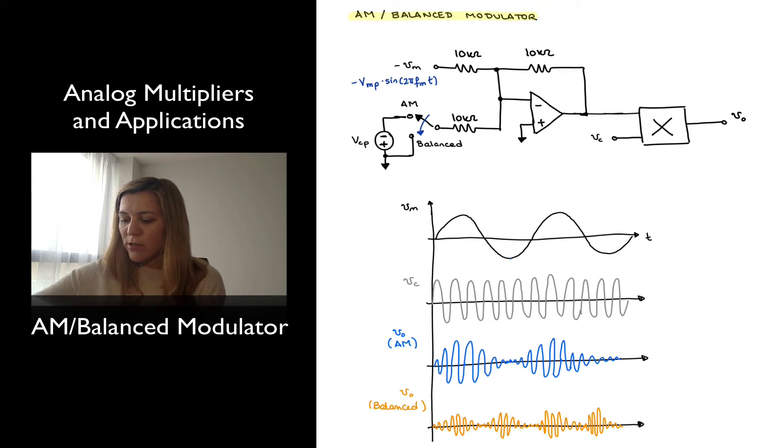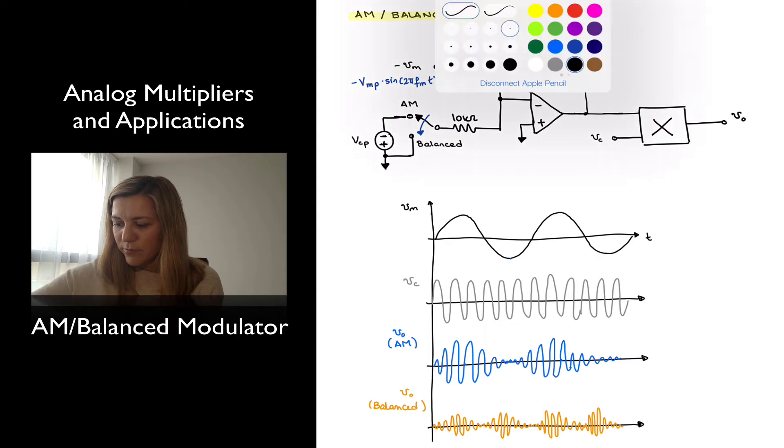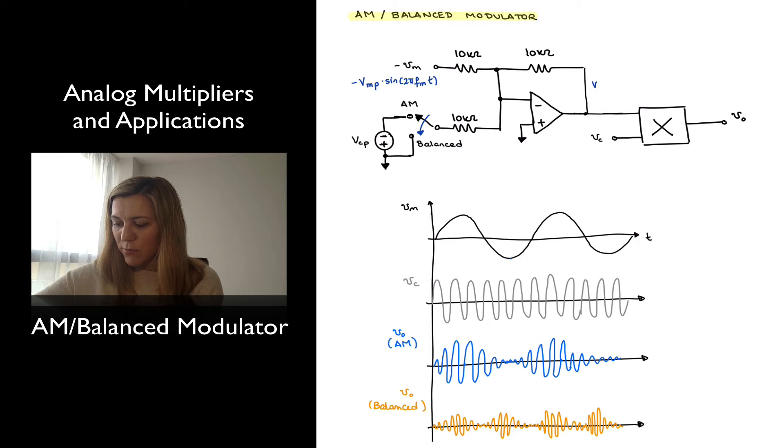And so what I get out here is going to be essentially negative negative negative make a plus. So I'm already going to put positive. So in the case of balanced modulation, I will just get VMP times the sine of 2 pi fm times t.